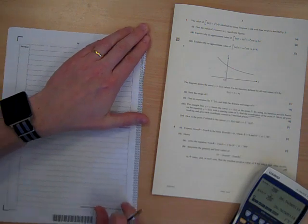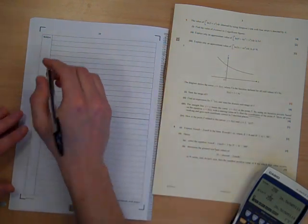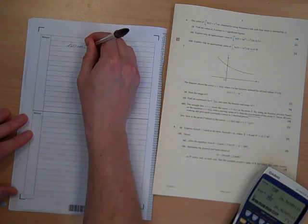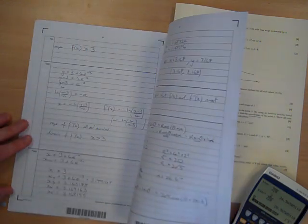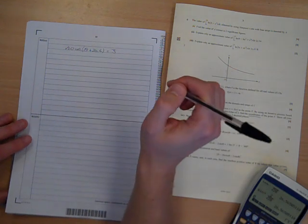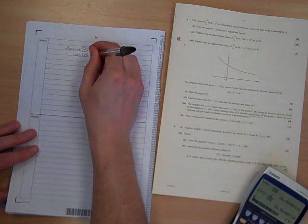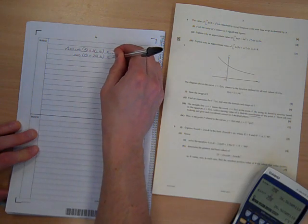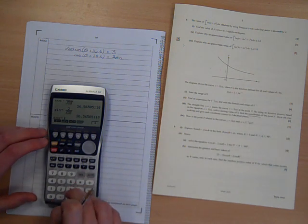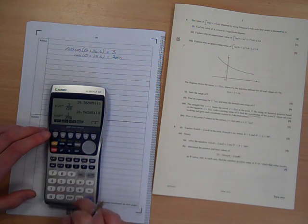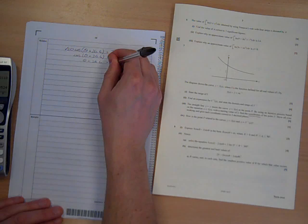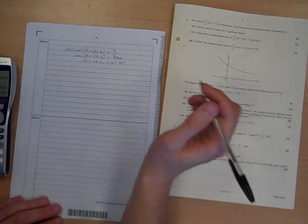Moving on to part 2. Solve the equation, hence solve the equation. So actually this equation really is root 20 cos theta plus 26.6 equals 3. So cos theta plus 26.6 is 3 over root 20. Inverse cos of 3 over root 20 is 47.86. 47.87 degrees.